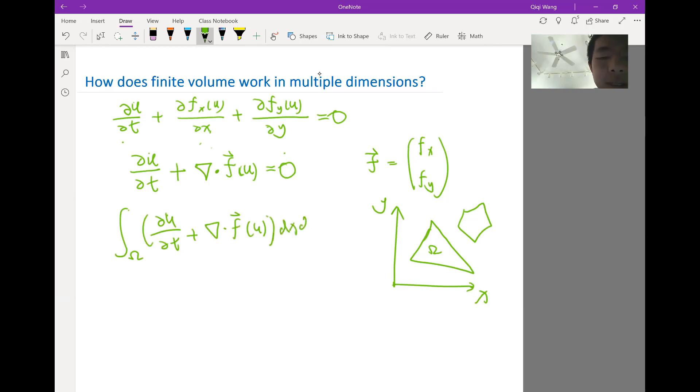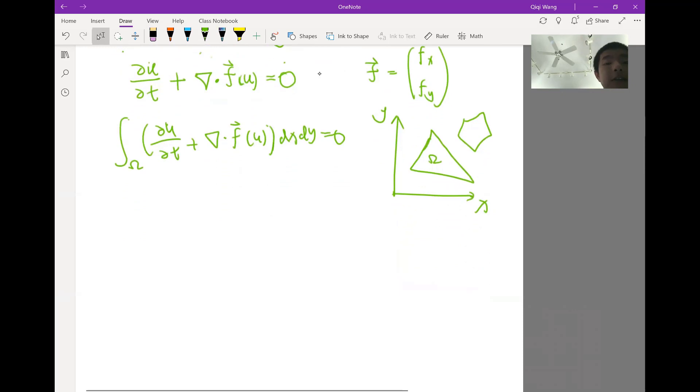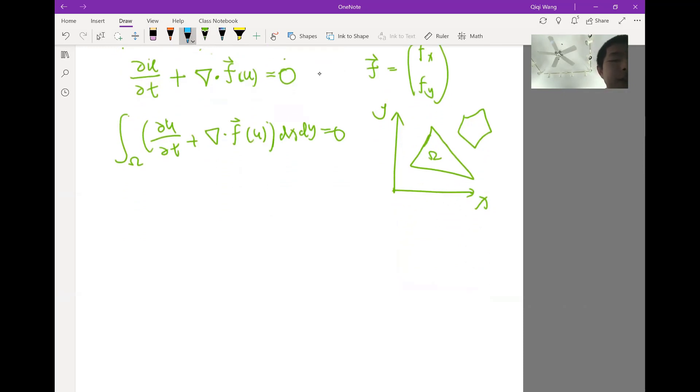The first term still comes out, the time derivative still comes out. We have the total amount of stuff within the volume, right? And that again translates into the average value of the function within the volume pretty easily. So it's basically the size, the area of this volume Omega, times d/dt of the average function within the Omega. That's the first term.